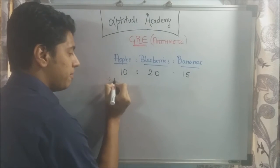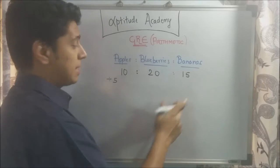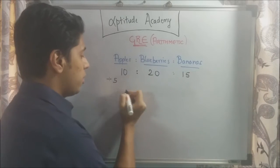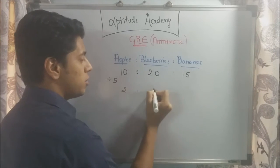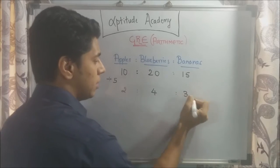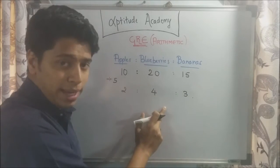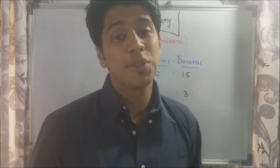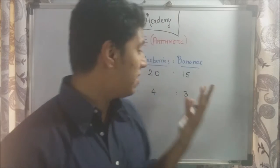To simplify it, I would divide it by 5, not by 10 because now we have 15 in the mix and we want integers. So what I'm going to do is, this will become 2 is to 4 is to 3. So now you know that for every two apples, there's going to be 4 blueberries and 3 bananas. So ratios help us relate quantities which don't have anything in common.